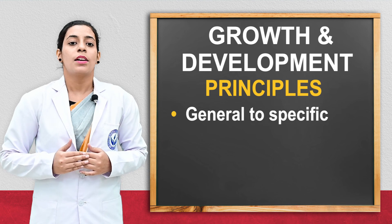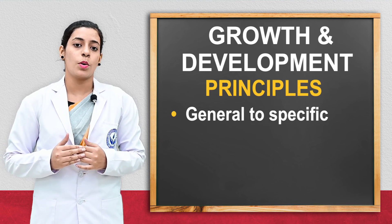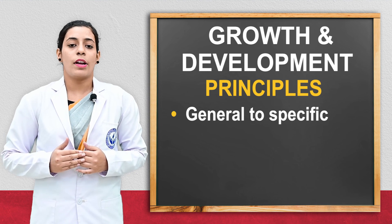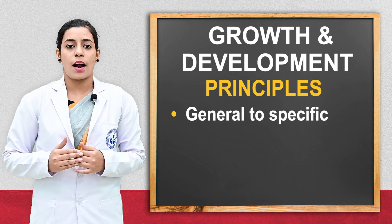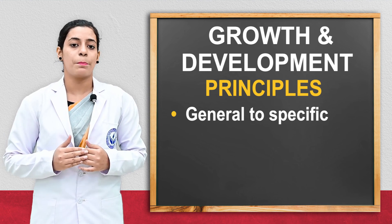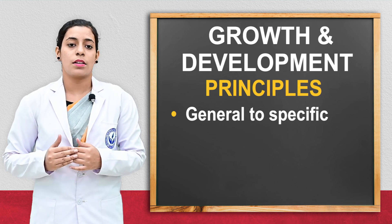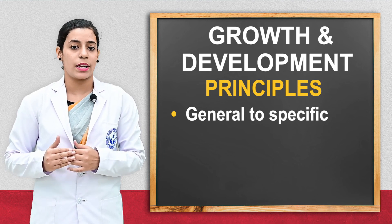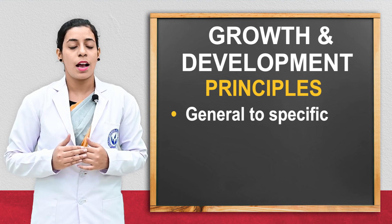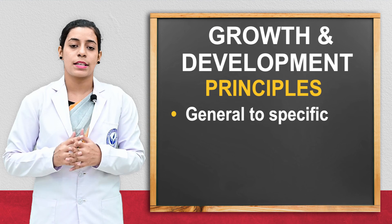The next principle is that growth and development proceeds from general to specific. It means growth starts from general, simple things and then moves to more specific things — for example, first the child moves their hands, and afterwards they move their fingers.